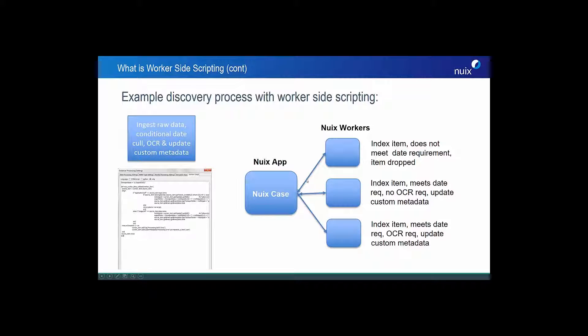For example, you can see this worker actually drops the item because it doesn't meet the date requirement. Or this worker processes the item because it meets the date requirement, and it even performs an OCR and updates the custom metadata.